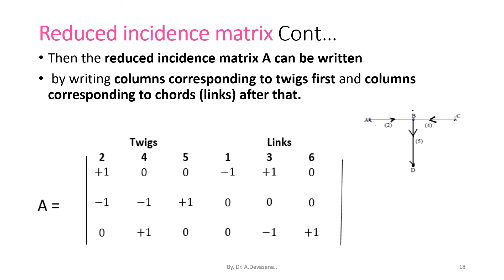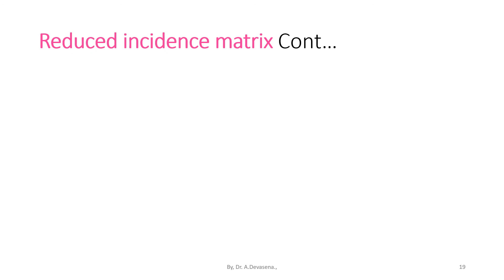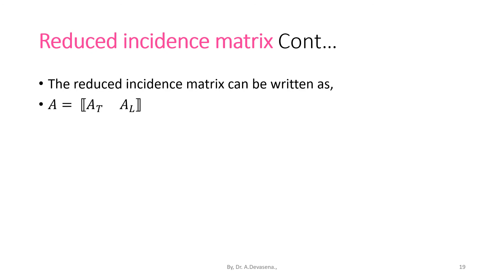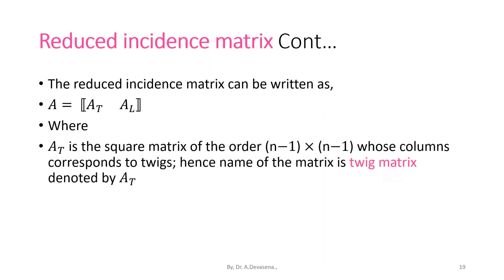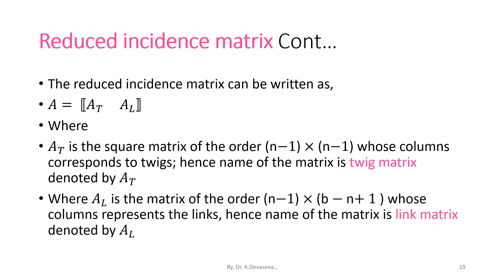The reduced incidence matrix A can be written as A equals the matrix of A suffix T and A suffix L, where A suffix T is the square matrix of order N-1 cross N-1 whose columns correspond to the twigs — called the Twig matrix, denoted by capital A suffix T. A suffix L is the matrix of order N-1 cross B minus N plus 1 whose columns represent the links — called the Link matrix, denoted by capital A suffix L.